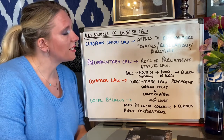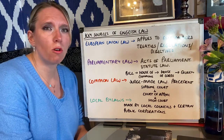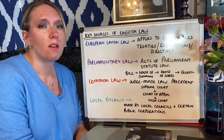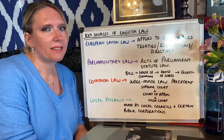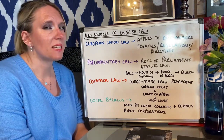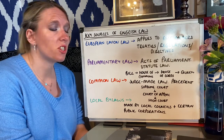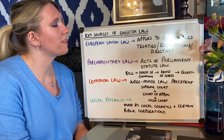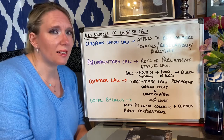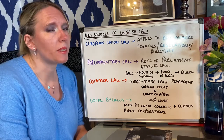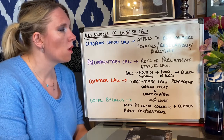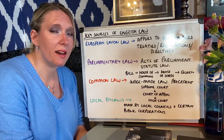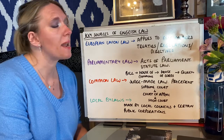Once the House of Commons and House of Lords have agreed on what the law should say, it is then passed to the monarch — the Queen — for royal assent. She simply signs it; she gives her assent, her signature. It hasn't been since the 1600s that a monarch has refused to sign something parliament has decided. Once the Queen signs a law, it usually commences at midnight — it becomes binding from then.